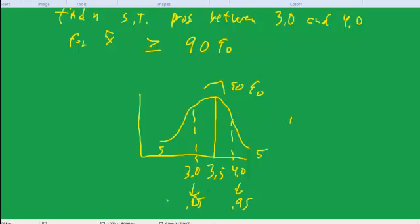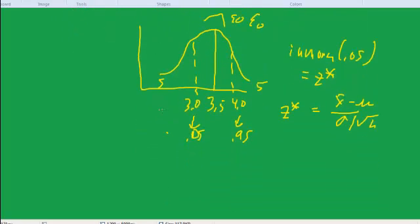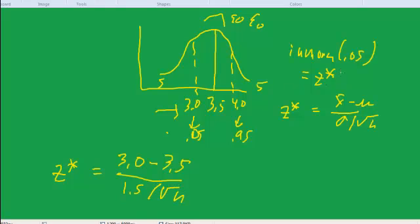So our strategy, and I'll leave it to you to walk through the math, would be to take invnorm of either one of these, and we'll do the 0.05, and that'll give us a z, a target for z. And then we let z equal x-bar minus μ over σ over square root of n. We have all these things, right? We have the x-bar, it was 3.0, that's the one that's associated with this boundary. So z-star is equal to 3.0 minus the μ, which we're given, over the σ of 1.5 over square root of n. So what's the invnorm of 0.05?